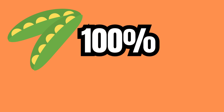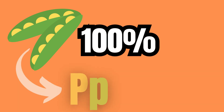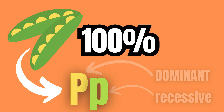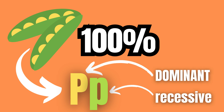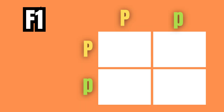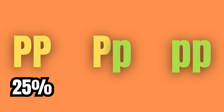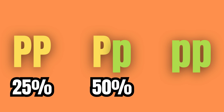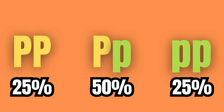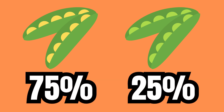However, since all the pea plants from the F1 generation are yellow, the yellow phenotype must be the dominant one. When crossing the F1 generation with itself, we pair up two heterozygotes and the resulting offspring will be 25% homozygotes dominant, 50% heterozygotes, and 25% homozygotes recessive. The resulting phenotype will therefore be 75% yellow peas and 25% green peas.